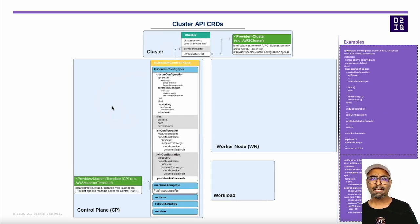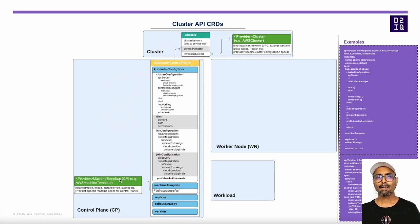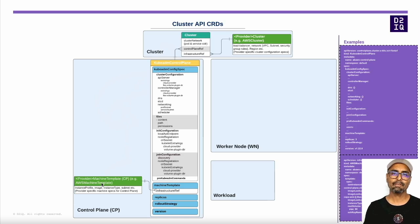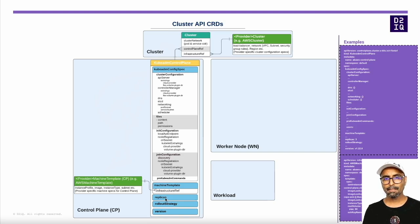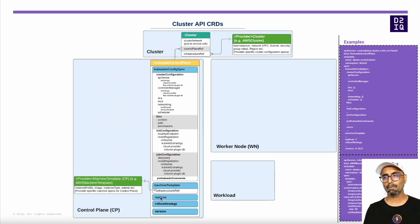The control plane CRDs include the kubeadm control plane resource and the provider machine template resource. The name of the resource depends on the provider — so if your provider is AWS, this resource will be called AWS machine template; if it's Azure, then Azure machine template and so on. The kubeadm control plane resource defines the kubeadm config spec for bootstrapping the control plane and a reference to the machine template used to spin up the control plane nodes. It also defines the number of control plane nodes and the rollout strategy to be used, just like we have a rollout strategy in a standard Kubernetes deployment.